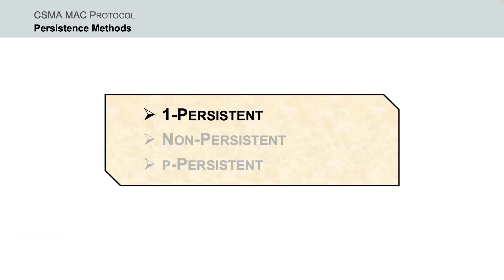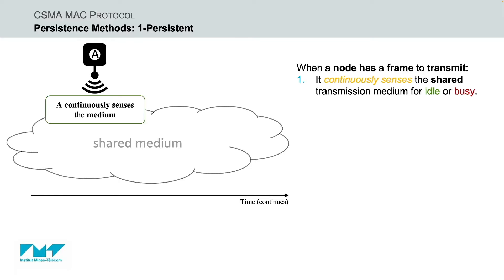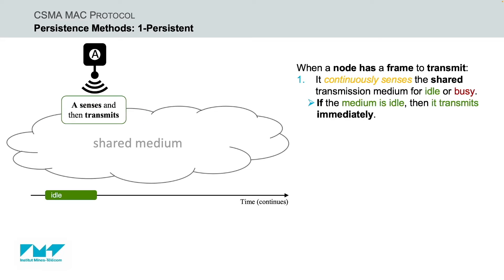Let's start with the one-persistent CSMA method. Under the one-persistent method, when the transmitting node has a frame to transmit, it continuously senses the shared transmission medium — in other words the shared channel — to check its state. More specifically, it checks if the medium is idle or busy. If the shared transmission medium is idle, node A transmits its frame immediately.